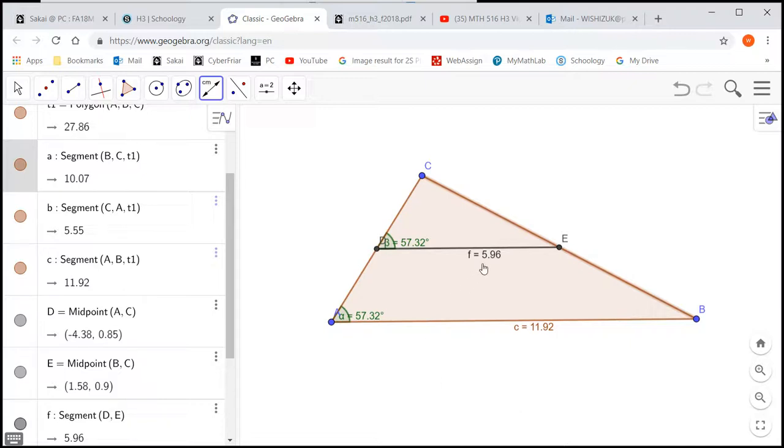So you can see that the midpoint connector is half the length of the third side and that they are parallel to each other because the corresponding angles here are exactly the same.